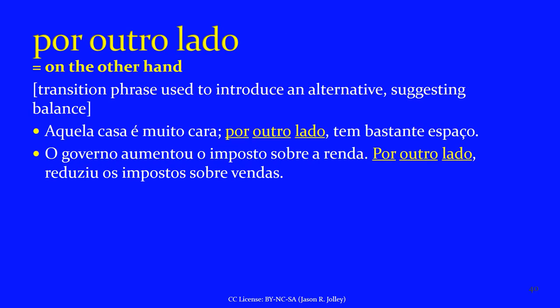POR OUTRO LADO means 'on the other hand.' This phrase introduces an alternative, suggesting balance between two independent clauses. 'Aquela casa é muito cara. Por outro lado, tem bastante espaço' — the house is very expensive; on the other hand, it has a lot of space. 'O governo aumentou o imposto sobre a renda. Por outro lado, reduziu os impostos sobre vendas' — the government increased the income tax, but on the other hand it reduced sales tax.